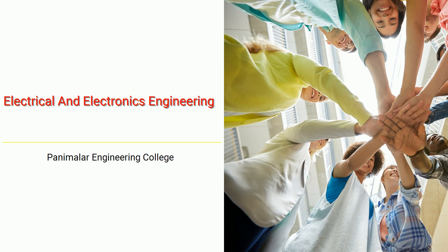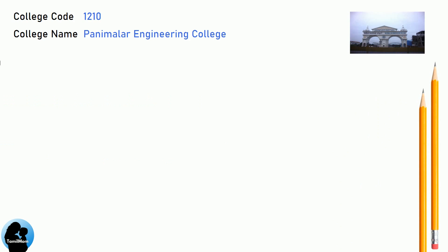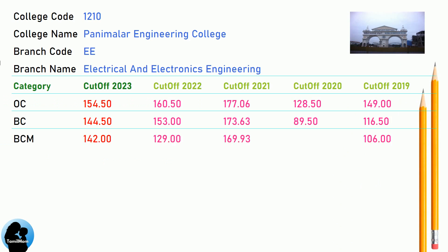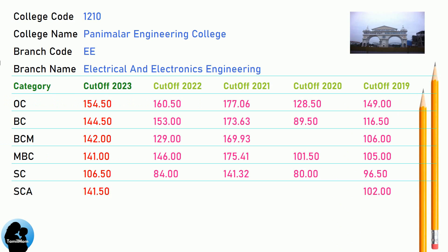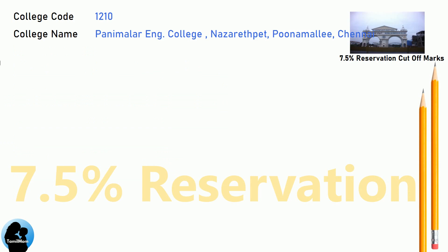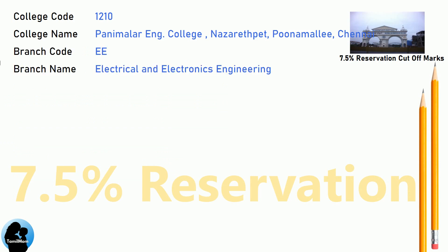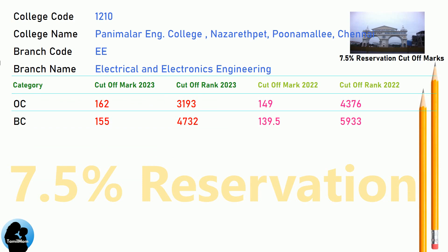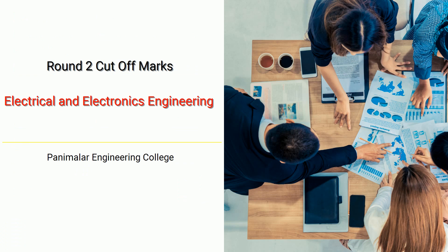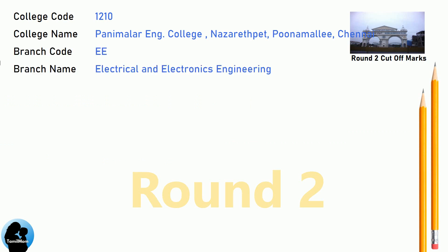DNEA Cut-off for Panimalar Engineering College in Electrical and Electronics Engineering. DNEA 7.5 Reservation Cut-off for Panimalar Engineering College in Electrical and Electronics Engineering. DNEA Round 2 Cut-off for Panimalar Engineering College in Electrical and Electronics Engineering.